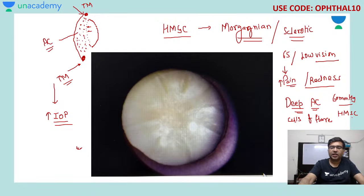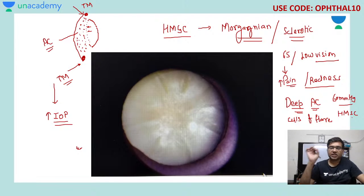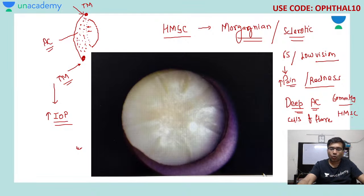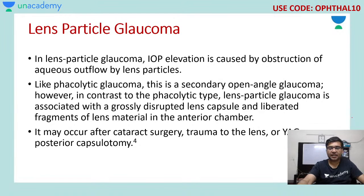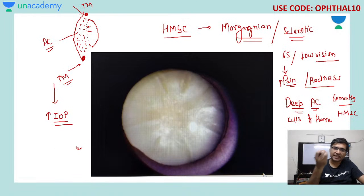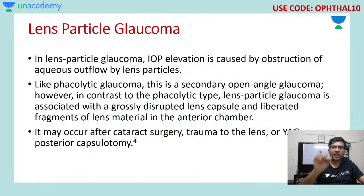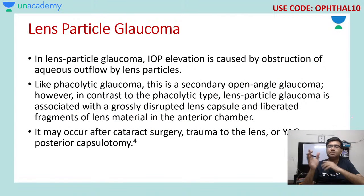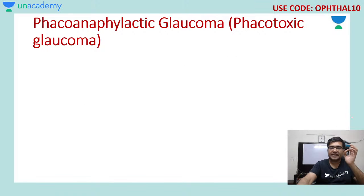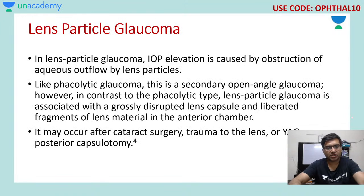The second type is lens particle glaucoma. In this condition, the elevated IOP is caused by obstruction of aqueous outflow by lens particles, which is somewhat different from phacolytic glaucoma.